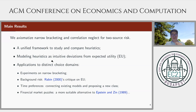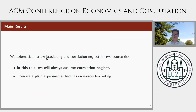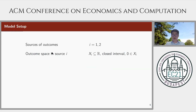Due to time limits, I don't have enough time to get to all of these, but I'm more than happy to discuss this afterwards in the coffee break or in the watch party if any of you is interested. For this talk, let's always assume correlation neglect and study variations on narrow bracketing. Then we will briefly discuss how to explain experimental findings on narrow bracketing. Okay, so that's the introduction. Now let's go to the model setup.